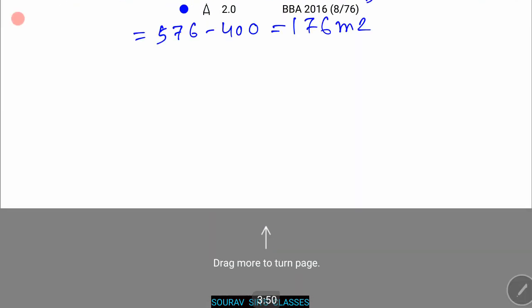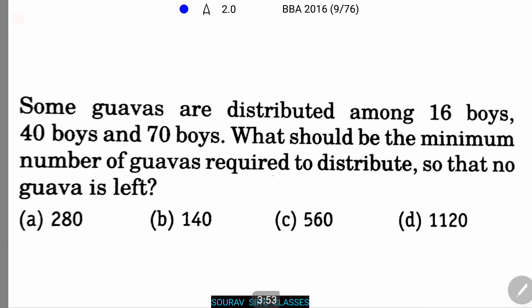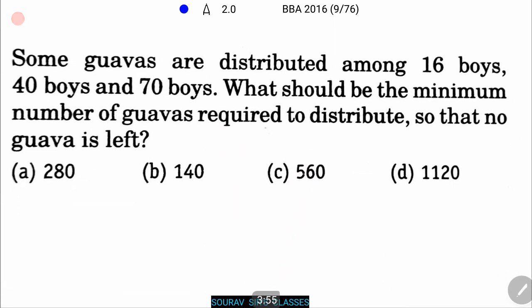Some guavas are distributed among 16 boys, 40 boys, and 70 boys. What should be the minimum number of guavas required to distribute so that no guava is left? At first, we find the LCM of 16, 40, and 70.